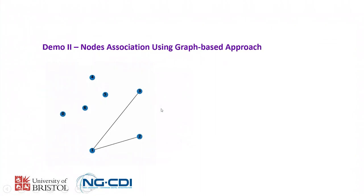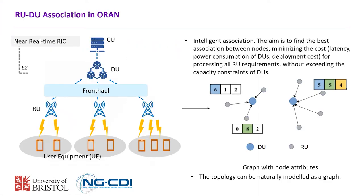Now we move to the second part of the demo, which is node association using a graph-based approach. In the first part we assumed the association status between DU and RUs was already known. Here we look at a more fundamental problem: intelligent association between DUs and RUs. The aim is to find the best association between nodes minimizing cost — for example latency, power consumption, deployment cost — while ensuring DUs can process all RU requirements without exceeding capacity.